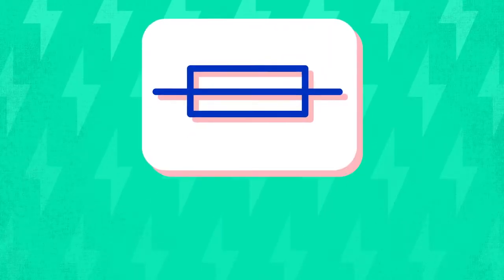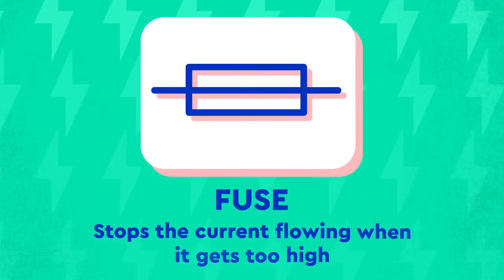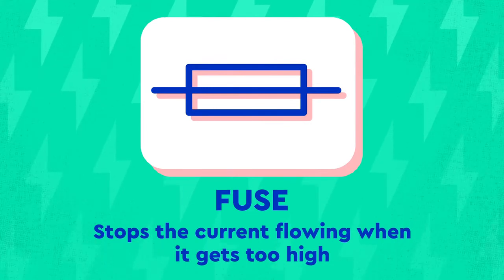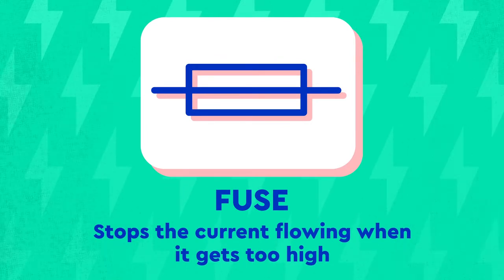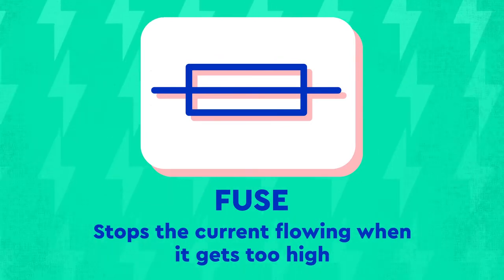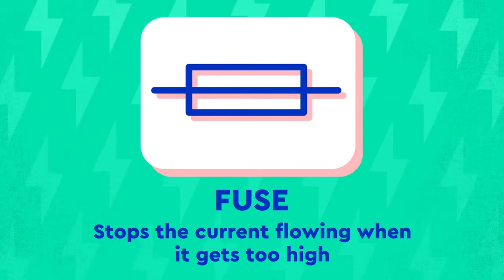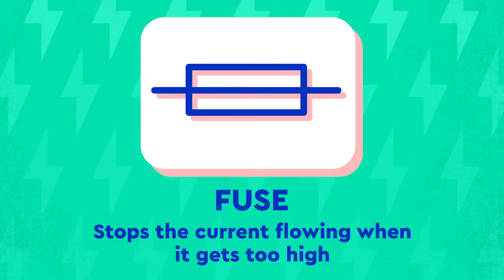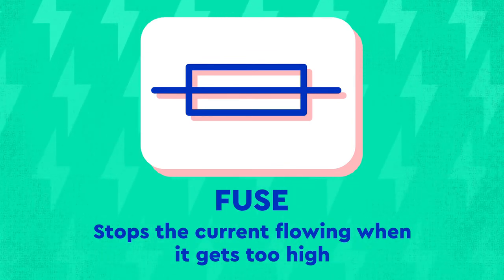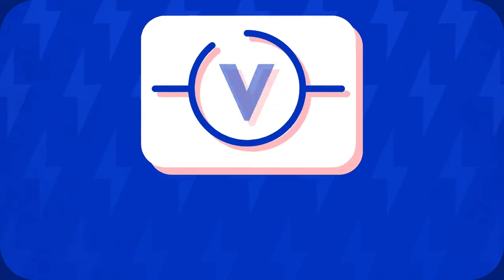This is a fuse. It stops the current flowing when the current gets too high. This is important for safety reasons and also helps protect other more expensive components in a circuit.